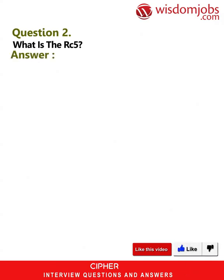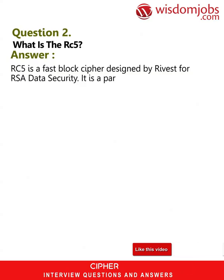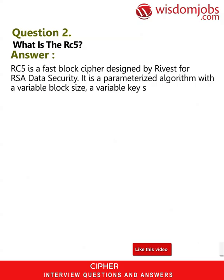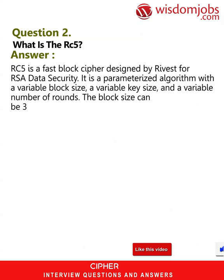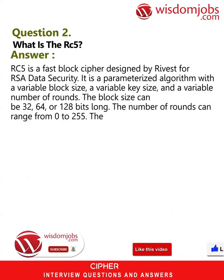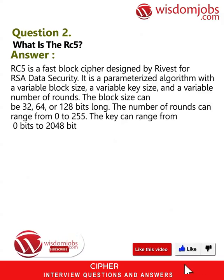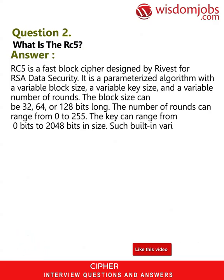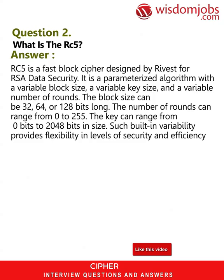Question 2: What is RC5? Answer: RC5 is a fast block cipher designed by Rivest for RSA Data Security. It is a parameterized algorithm with a variable block size, a variable key size, and a variable number of rounds. The block size can be 32, 64, or 128 bits long. The number of rounds can range from 0 to 255. The key can range from 0 bits to 2048 bits in size. Such built-in variability provides flexibility in levels of security and efficiency.